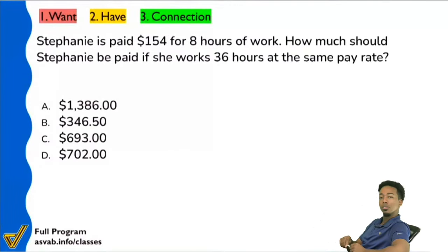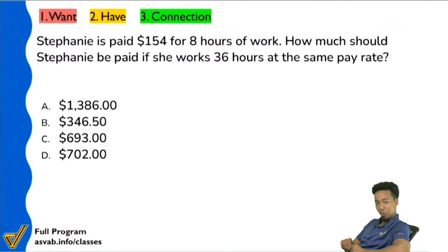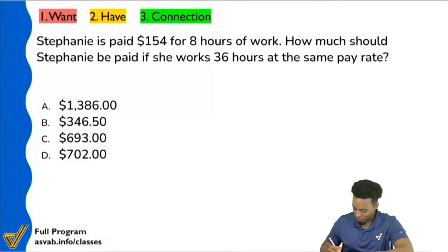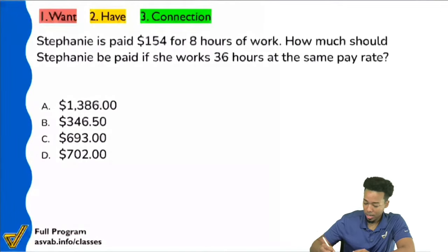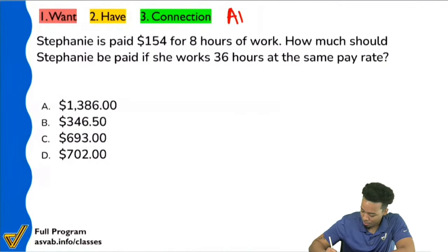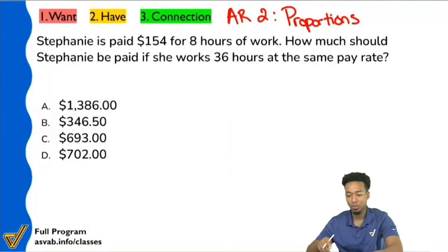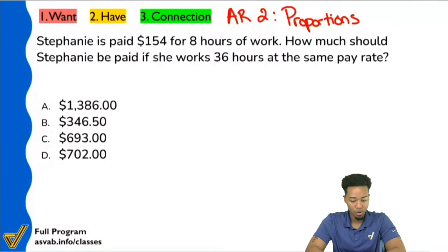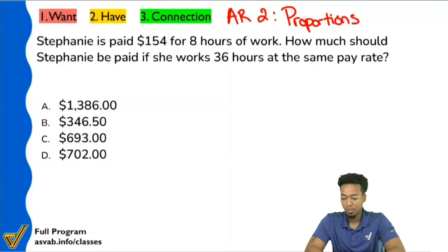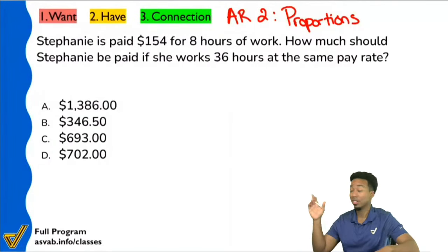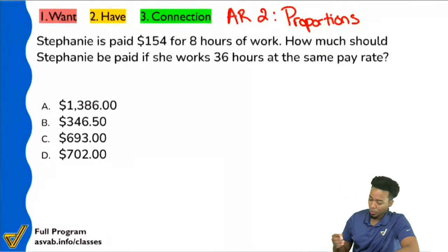Who knows what topic this is? That's correct — this is proportions. If you're in my program, this is Arithmetic Reasoning Unit 2, Proportions. If you want to learn more, there's a link in the chat. Let's take a look at the question: 'How much should Stephanie be paid if she works 36 hours at the same pay rate?' There are two ways to tell that this is a proportion question.